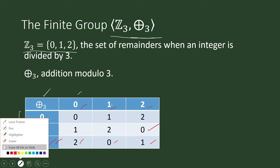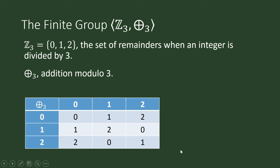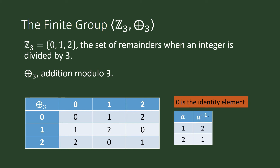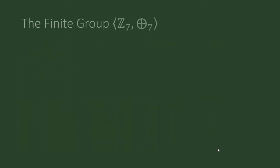The identity element in this group is 0. The inverse of 1 under addition modulo 3 is 2, and the inverse of 2 under addition modulo 3 is 1, because 2+1 = 0.